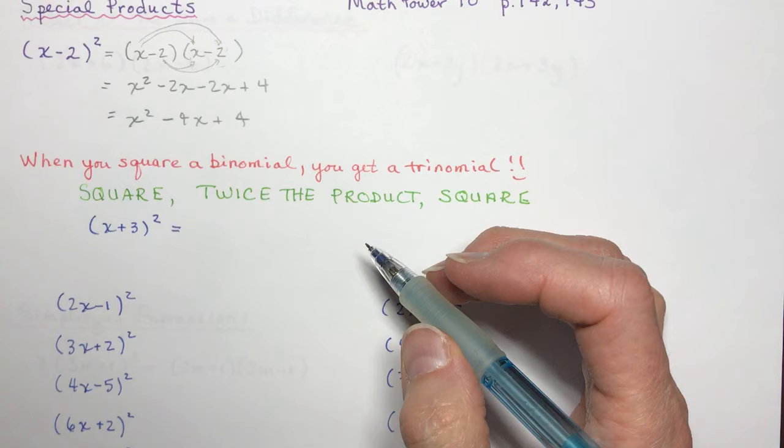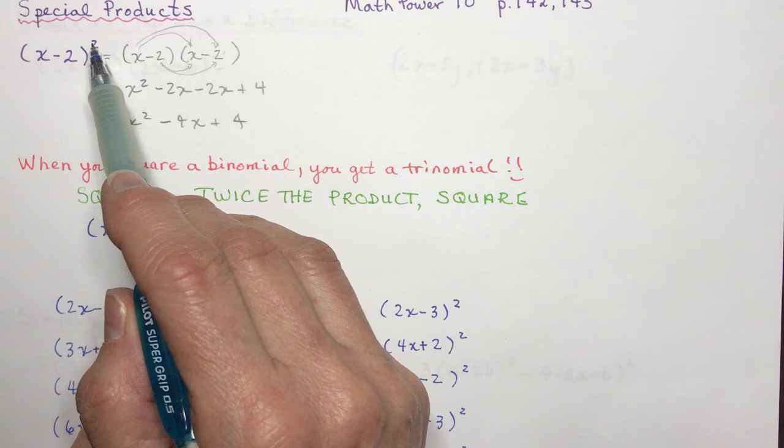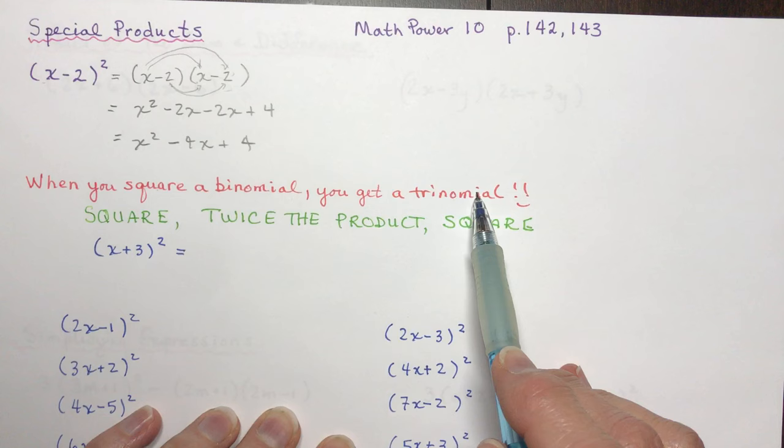So what's the easier way to do this — how can we make it faster? When you square a binomial, you get a trinomial, meaning you're going to have three terms when you're done.